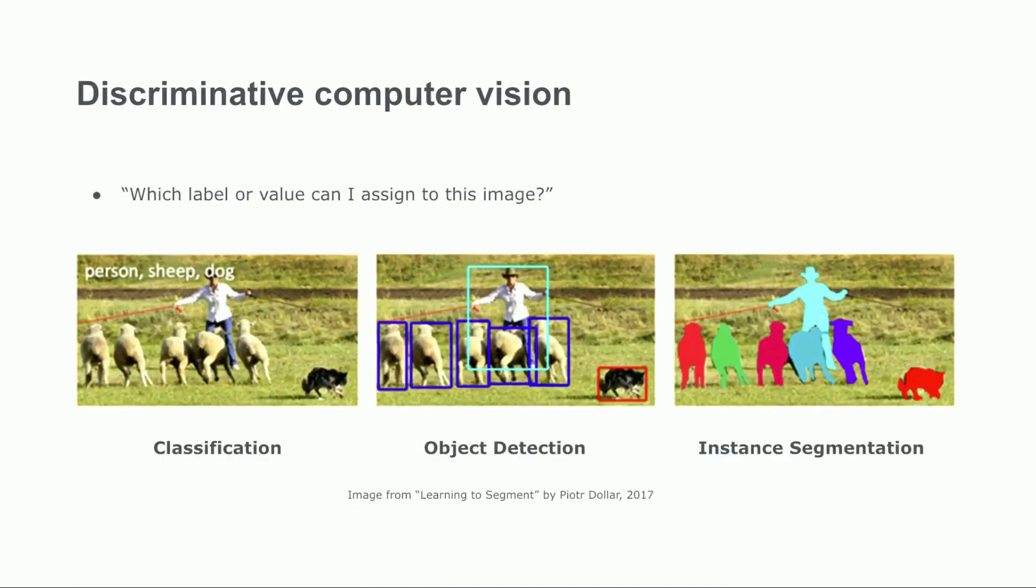We'll begin by exploring the three fundamental discriminative tasks in modern computer vision: classification, object detection, and segmentation. Discriminative models in computer vision are supervised machine learning models that assign classes or scores to images based on a labeled training set. They do this in a way that is either localized or global.